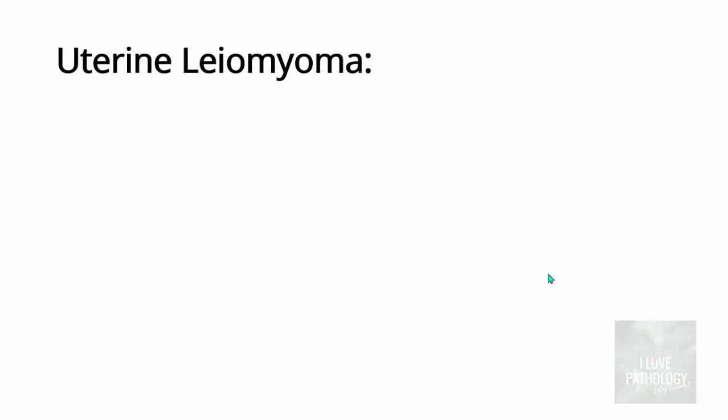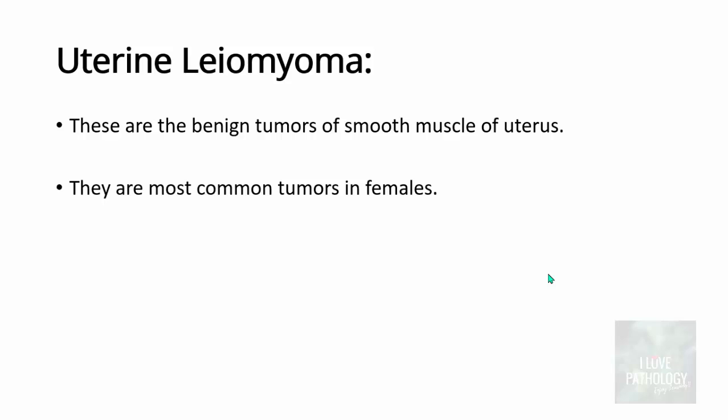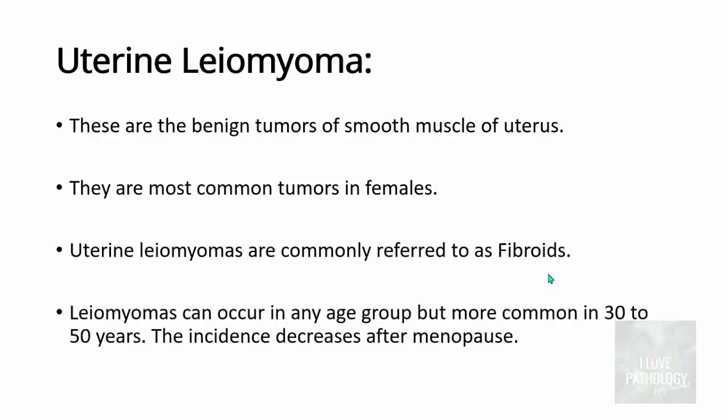Now what is this uterine leiomyoma? These are benign tumors. Leiomyoma means a smooth muscle tumor, benign smooth muscle tumor. Uterine leiomyoma meaning benign smooth muscle tumor of the uterus. They are most common tumor in females and they are commonly referred to as fibroids. These leiomyomas can occur in any age group but they are more common in 30 to 50 years. The incidence decreases after menopause.